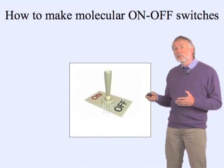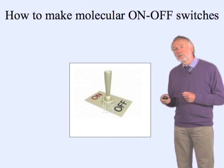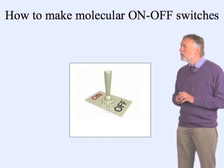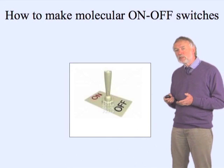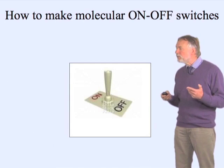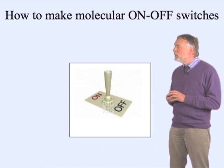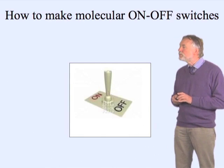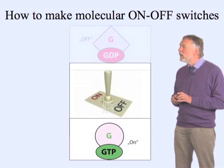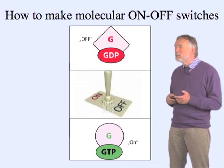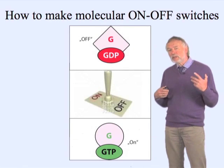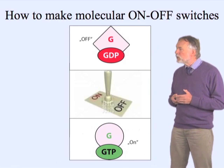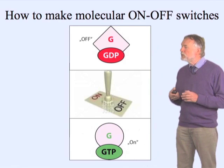The question boils down to: how do you construct a molecular switch that is reversible, that can be regulated at any level, and then does the thing that it's supposed to do? Nature has devised a very large class of proteins called GTP-binding proteins, and that comes in two flavors.